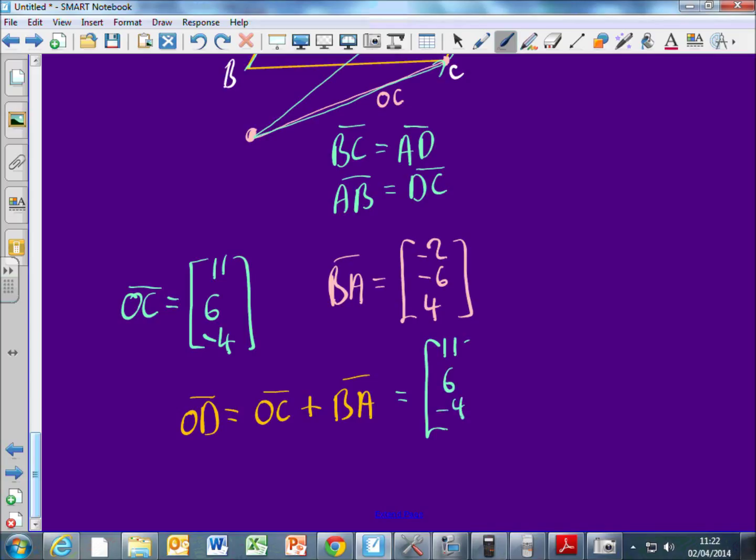So just look at the picture one more time. If I want to get from O to D, it's the same as going from O to C and then adding on B to A. Because it's a parallelogram. So I think all we have to do is O to C plus B to A, so it's just 11, 6, negative 4, plus negative 2, negative 6, and 4. It's the same as what you did. 9, 0, 0. Is that right? And so the position of D as a coordinate is 9, 0, 0.